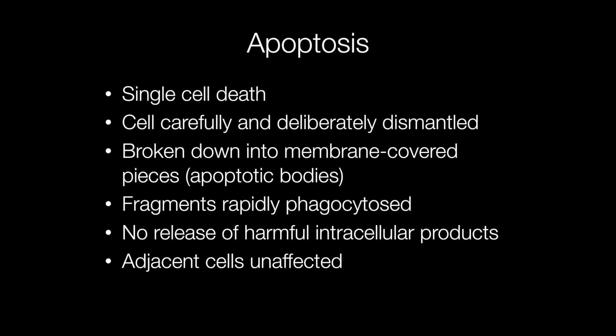But there is a lot more to it than a single dead cell. The cell is carefully and deliberately dismantled, allowing it to be broken down into membrane-covered pieces known as apoptotic bodies. These fragments are rapidly phagocytosed. In this way, no harmful intracellular products are released, leaving adjacent cells unaffected and undamaged.